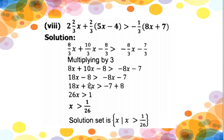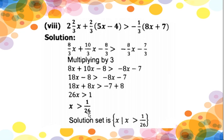Taking all variables to the left hand side: this -8x moves to the left becoming +8x, and the constant -8 moves to the right becoming +8. So: 18x + 8x = 26x, and -7 + 8 = 1 because of opposite signs. This 26 is a constant multiplying with x; when moved to the other side it will be divided. So x is greater than 1/26. This is the final solution: x is greater than 1/26. I hope you will nicely understand the inequalities and how we can find the solution of these inequalities.